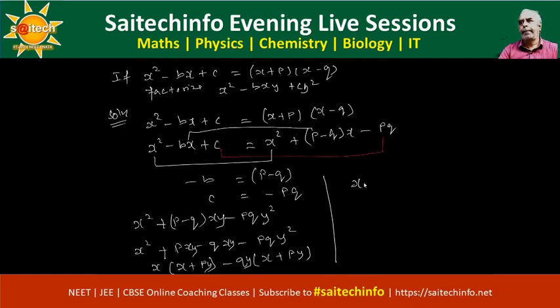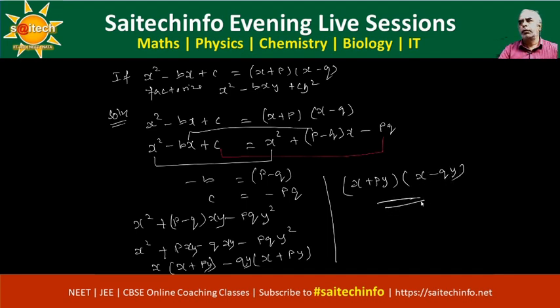Now x plus py can be taken out as a common factor. So the remaining term is x minus qy. Therefore the factors of x squared minus bxy plus cy squared are x plus py and x minus qy.